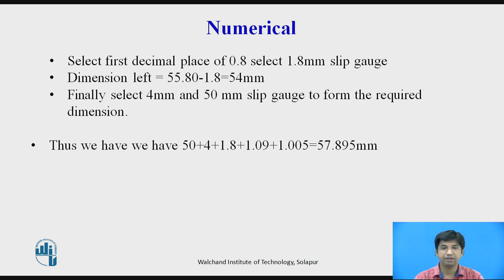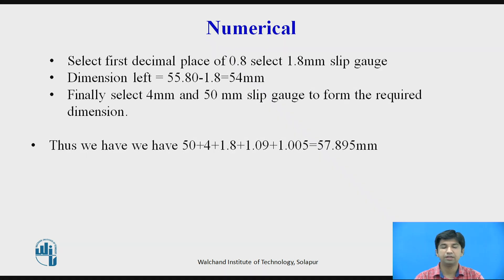Thus: 50 + 4 + 1.8 + 1.09 + 1.005 = 57.895 mm. The minimum number of gauges required to build up the given dimension is 5.